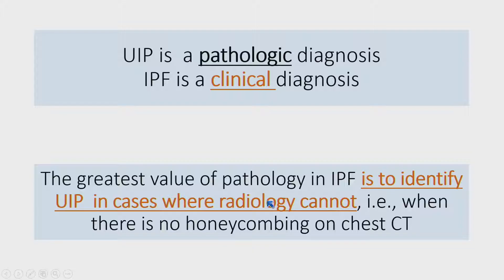Here is basically the bottom line of this talk. I'll give you the bottom line up front, then we'll go through the talk and repeat it at the end. First of all, UIP is a pathologic diagnosis — it does not require clinical correlation. It is a diagnosis that can be made on a biopsy specimen based purely on pathologic features. However, IPF is a clinical diagnosis, made by clinicians, not pathologists.